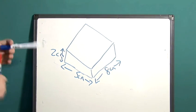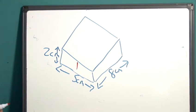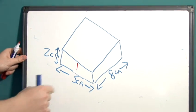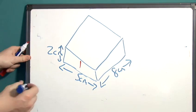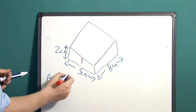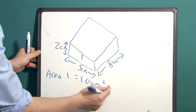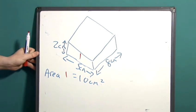First of all let's start with this one. The area of this shape because it's a rectangle is simply 2 multiplied by 5. So the area of 1, I've labelled it 1, is equal to 10 centimetres squared. Remember it's centimetres squared because we're dealing with an area.